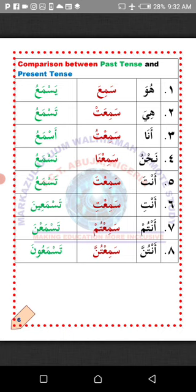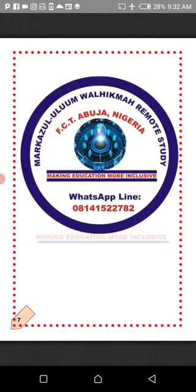So Antum — Tasma'una — you can all hear, for a group of male persons. While Antunna — Tasma'na — for a group of female persons. La'alaka fahimti? I hope you understand. MashaAllah. Subhanaka Allahumma wa bihamdik. Ash'hadu an la ilaha illa anta. Astagfiruka wa atubu ilayka. Do not forget to go to the classroom.